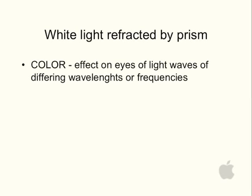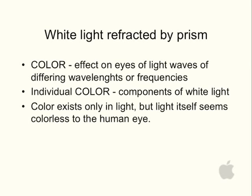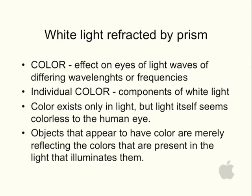What we call color is the effect on our eyes of light waves of differing wavelengths or frequencies. When combined, these light waves make white light, so an individual color is a component of white light. Color only exists in light, but light itself seems colorless to the human eye. Objects that appear to have color are merely reflecting the colors that are present in the light that illuminates them.